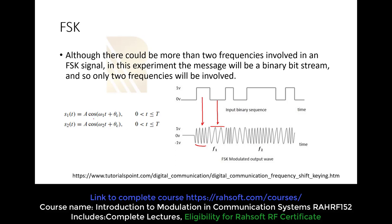For zero, we are going to send S1, which is A cosine omega-1-t. The frequency is omega 1. And for data one — if we have a data one or high level — we are going to send A cosine omega-2-t. This is a different frequency. In this approach, the message will be a binary bit stream, and only two frequencies will be involved because we have two levels.